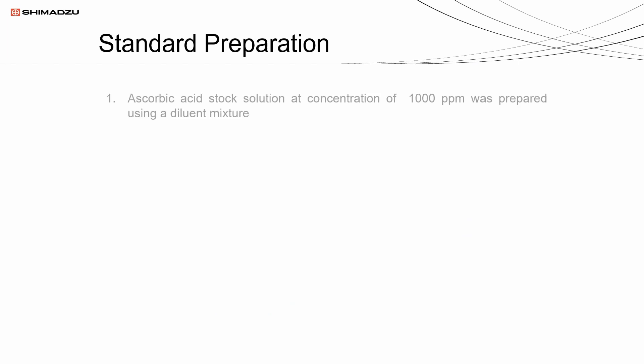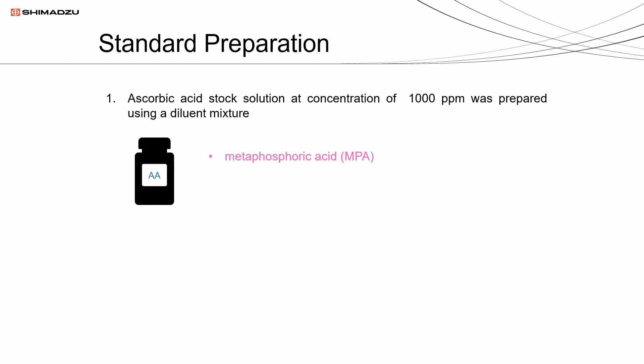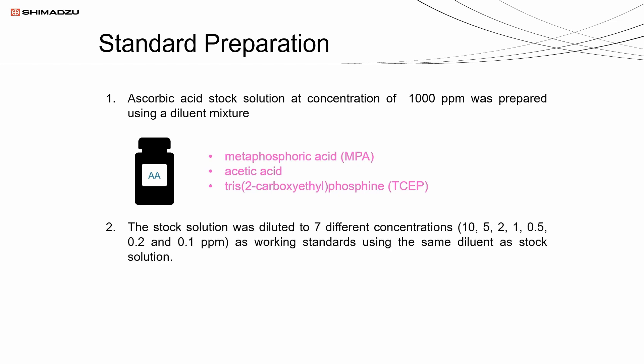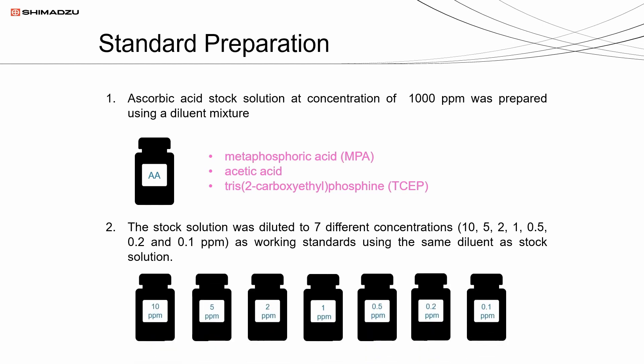For the standard preparation, an ascorbic acid stock solution at a concentration of 1000 ppm was prepared using a diluent mixture of metaphosphoric acid, acetic acid, and TCEP. The stock solution was then diluted to 7 different concentrations as working standards using the same diluent as the stock solution.